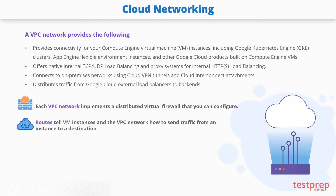Routes tell VM instances and the VPC network how to send traffic from an instance to a destination, either inside the network or outside of Google Cloud. Each VPC network comes with some system-generated routes to route traffic among its subnets, and send traffic from eligible instances to the internet.